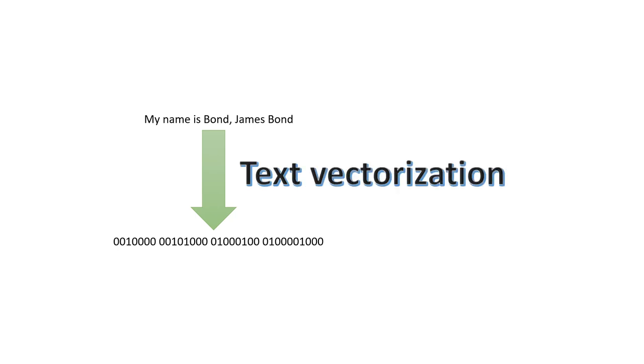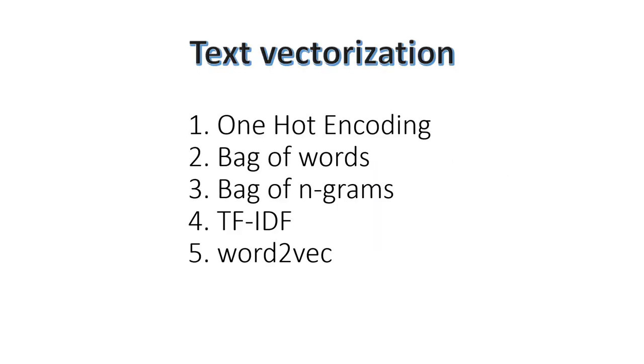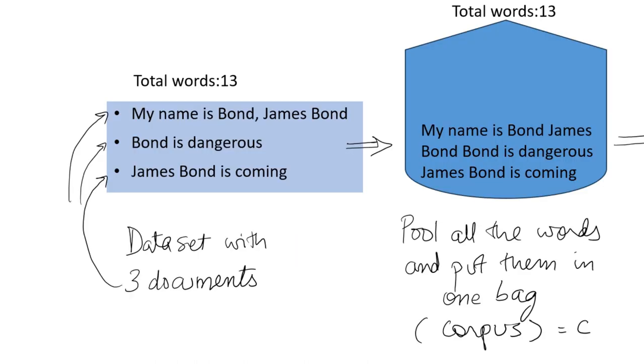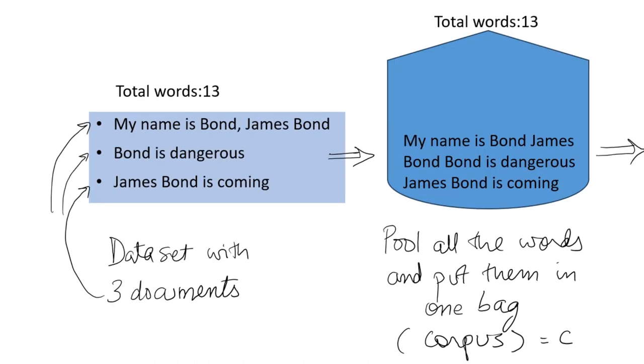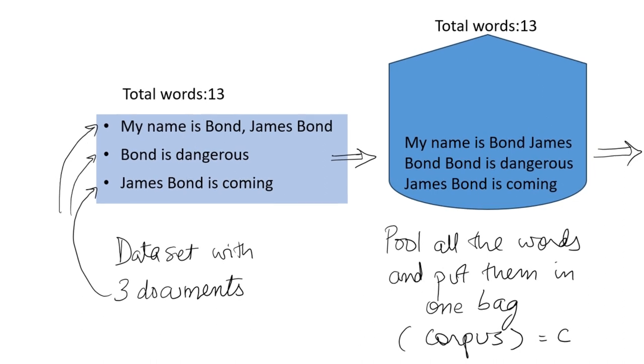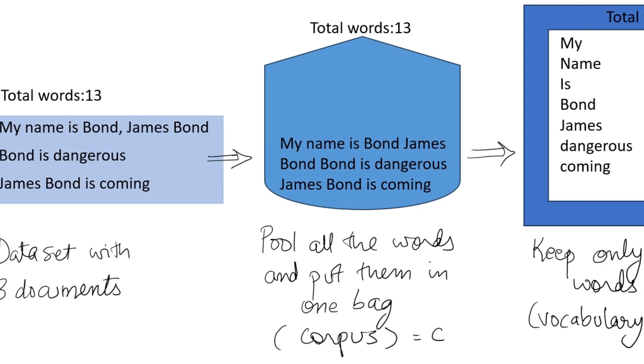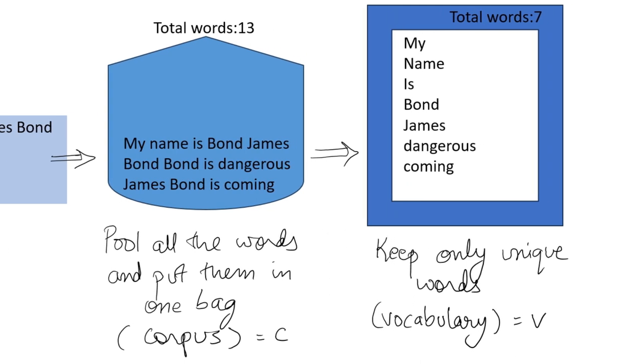Now let us see how we can use TF-IDF for text vectorization. First, we need a vocabulary which we can get by putting all the words in my dataset into one bag called the corpus, and then keeping only the unique words from the corpus. This will be our vocabulary.